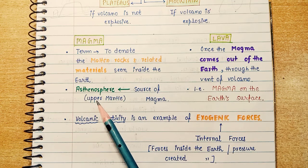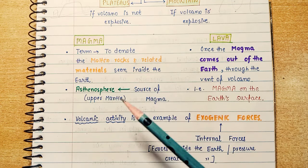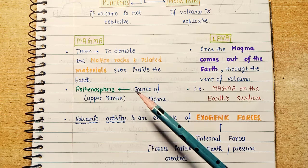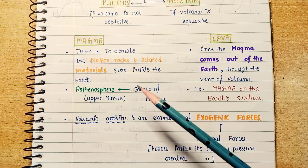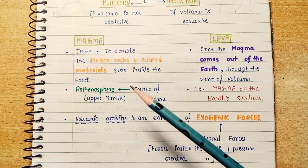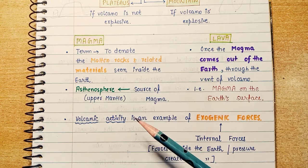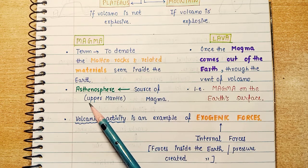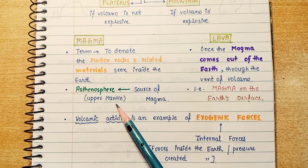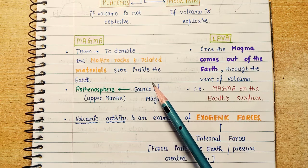The asthenosphere is the upper mantle. We have learned that the earth has three layers: crust, mantle, and core. The crust has upper crust and lower crust; the mantle has upper mantle and lower mantle; the core has inner core and outer core. The upper mantle is called the asthenosphere, and it is known as the source of magma.